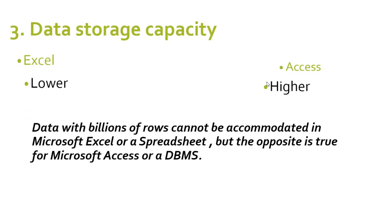The third comparison has to do with data storage capacity. Both applications can store data, but they vary sharply in the amount of data each can store. Excel has a lower storage capacity compared to Access, which has a higher storage capacity. Data with billions of rows cannot be accommodated in Microsoft Excel, whereas the opposite is true for Microsoft Access, because database systems are built purposely to store data that builds up concurrently over time.